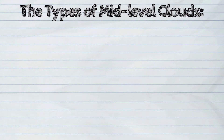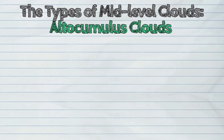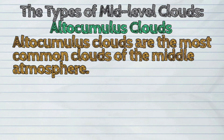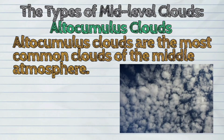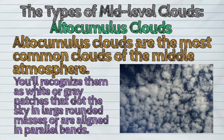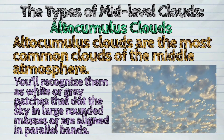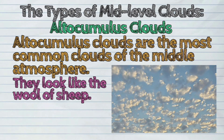There are two types of mid-level clouds. First, the altocumulus clouds. Altocumulus clouds are the most common clouds of the middle atmosphere. You'll recognize them as white or grey patches that dot the sky in large rounded masses or are aligned in parallel bands. They look like the wool of sheep.